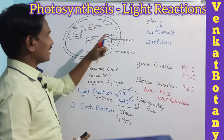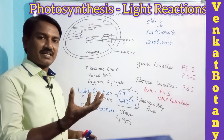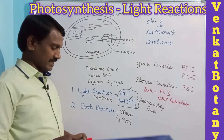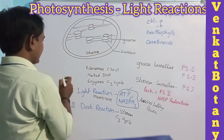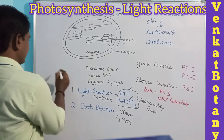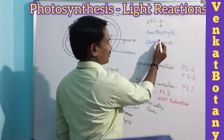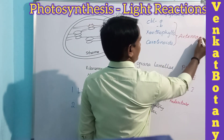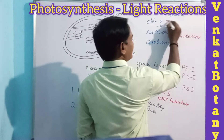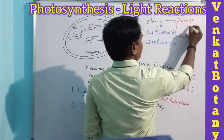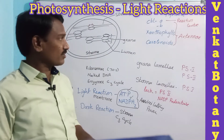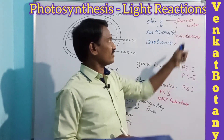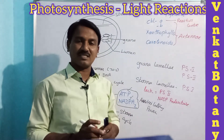On the thylakoid membrane, pigments are present that trap light energy in the form of photons. Chlorophyll b, xanthophyll, and carotenoids act as antenna pigments. Chlorophyll a acts as the reaction center. The antenna pigments trap light energy in the form of photons and transfer that energy to the reaction center, which is chlorophyll a.